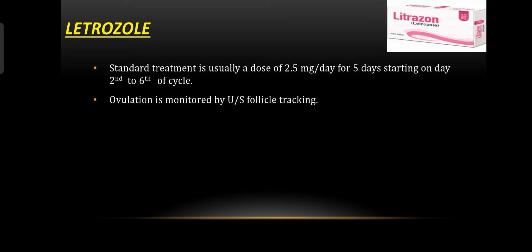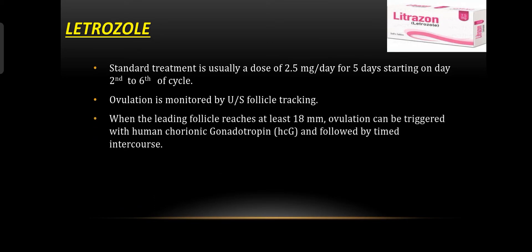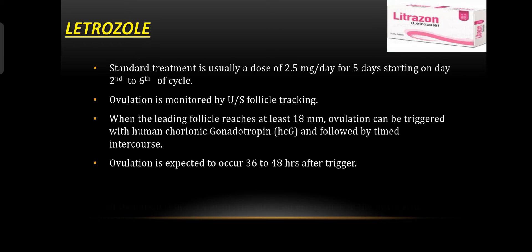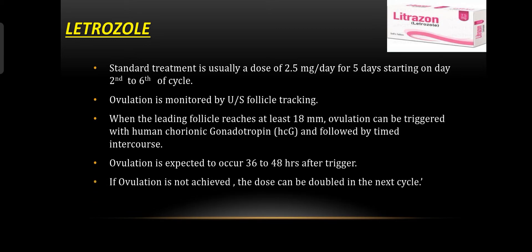How do we prescribe letrozole? The standard dose is 2.5 mg per day for five days, starting on day 2 to 6 of the cycle. Ovulation is monitored by ultrasound follicle tracking. When the leading follicle reaches at least 18 mm, ovulation can be triggered with human chorionic gonadotropin (hCG), followed by timed intercourse. Ovulation is expected to occur 36 to 48 hours after trigger. If ovulation is not achieved, the dose can be doubled in the next cycle.